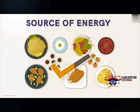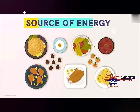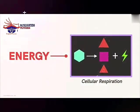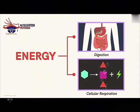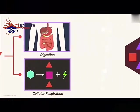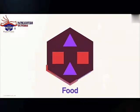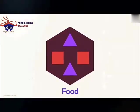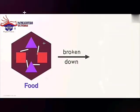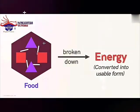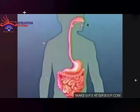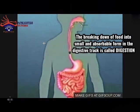We usually believe that energy is derived from the food we eat, and as a matter of fact that is partly correct. The food is just the source of energy. Energy is derived from two processes: cellular respiration, which follows digestion. These two processes aid in deriving energy stored in the food. The food we eat contains energy stored in molecules in the form of bonds. These bonds are broken and the released energy is converted to a usable form. The breaking down of food into smaller and absorbable form in the digestive tract is called digestion.